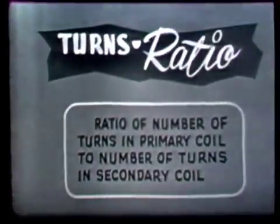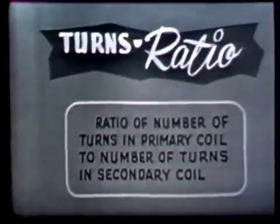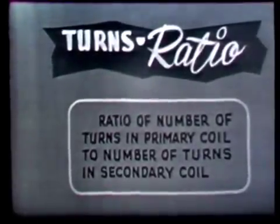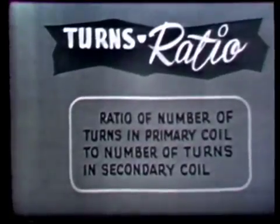The transformer can step a voltage up or it can step it down. The voltage increase or decrease is determined by the turns ratio of the particular transformer. The turns ratio is the ratio of the number of turns in the primary coil to the number of turns in the secondary coil. For example, if the primary coil has 500 turns and the secondary 1,000 turns — twice the number of the primary, or a ratio of 1 to 2 — let's see what happens to the voltage.